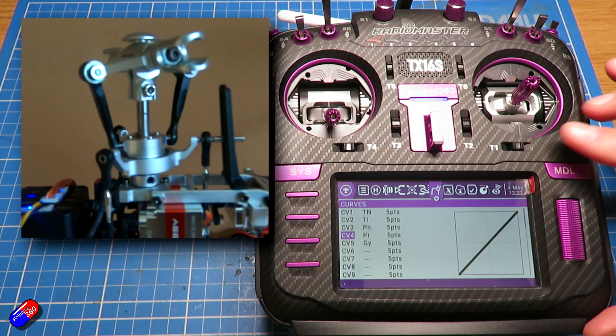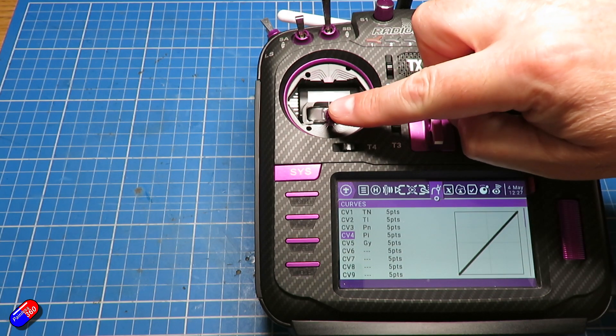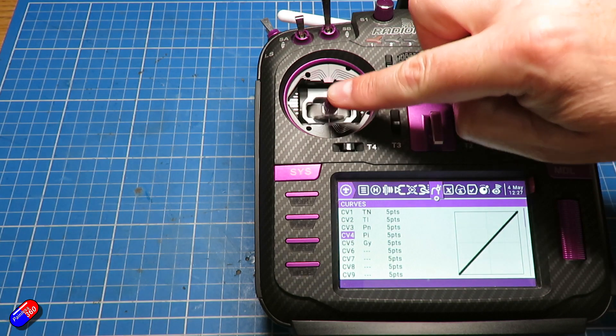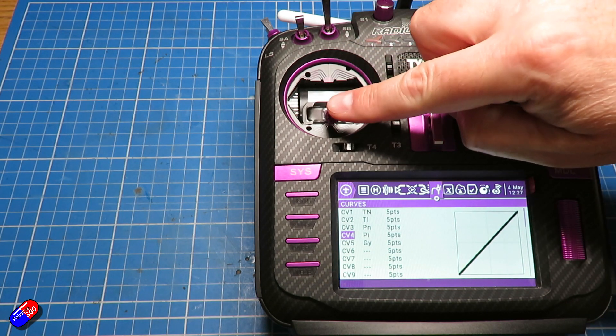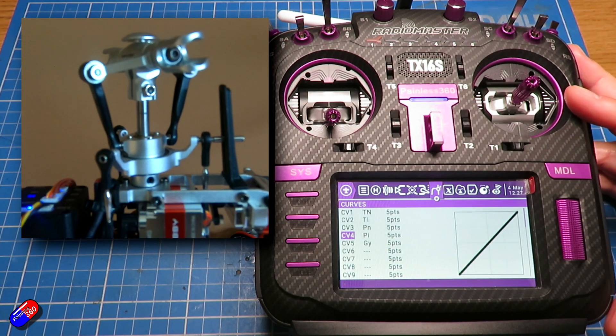So that is the relationship. The throttle is doing two things on a collective pitch helicopter like this. It's giving you the throttle which allows you to speed up and slow down the motor, but it's also adjusting the pitch on the blades, and that's how those things work together.